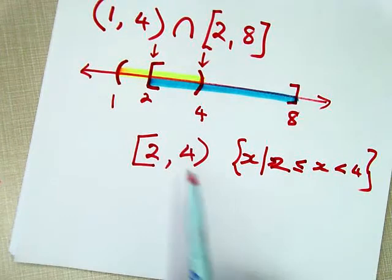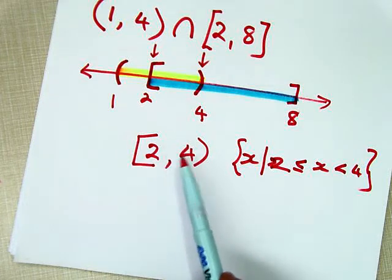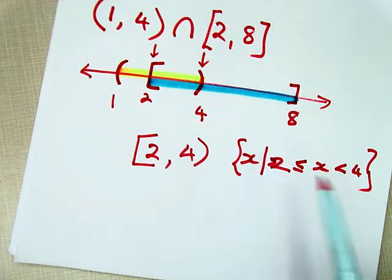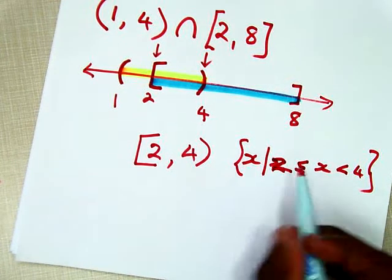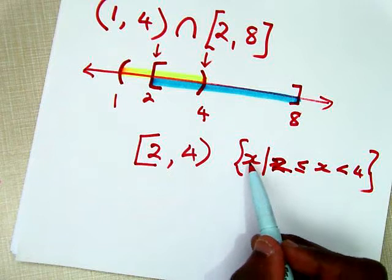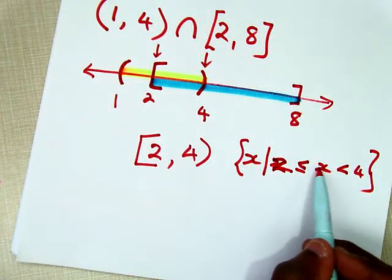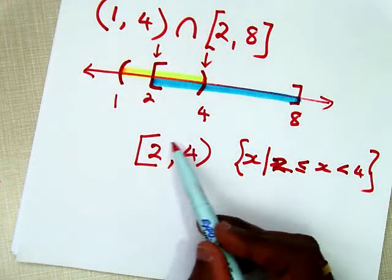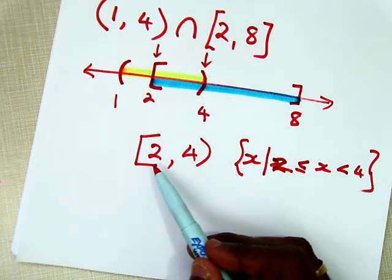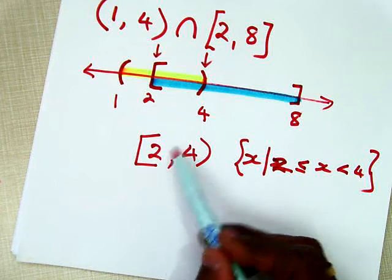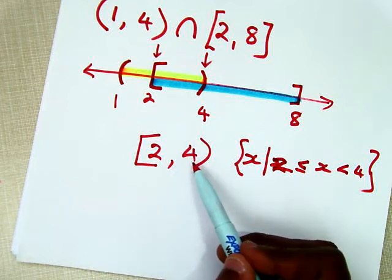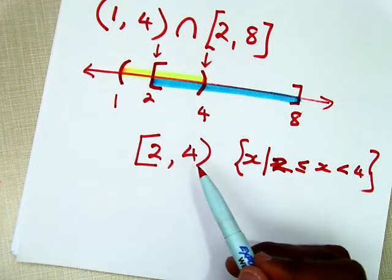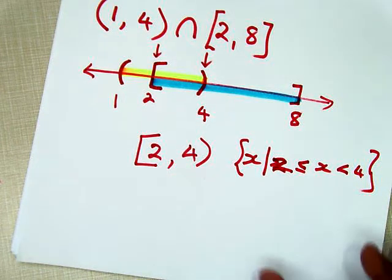So this means x such that x is greater than or equal to 2 but less than 4. I can write the answer in interval notation as [2, 4), or in set-builder notation as x such that x is greater than or equal to 2 and less than 4. Notice the 2 has a square bracket so it's included, whereas the 4 does not, so 4 is not included in the solution set.